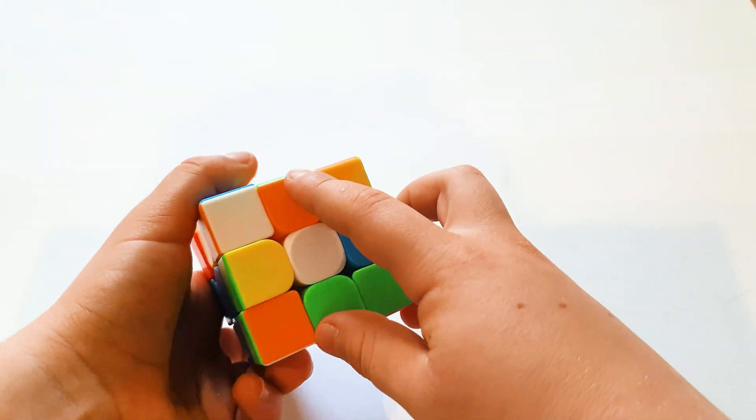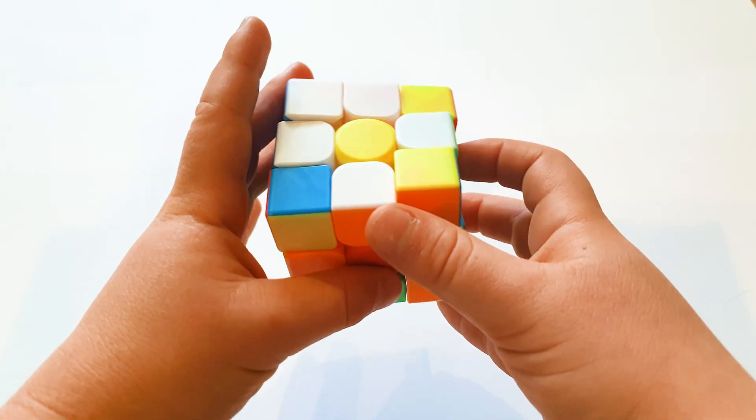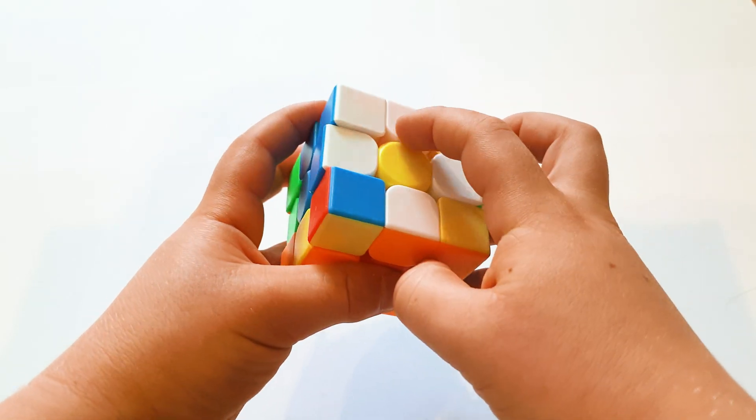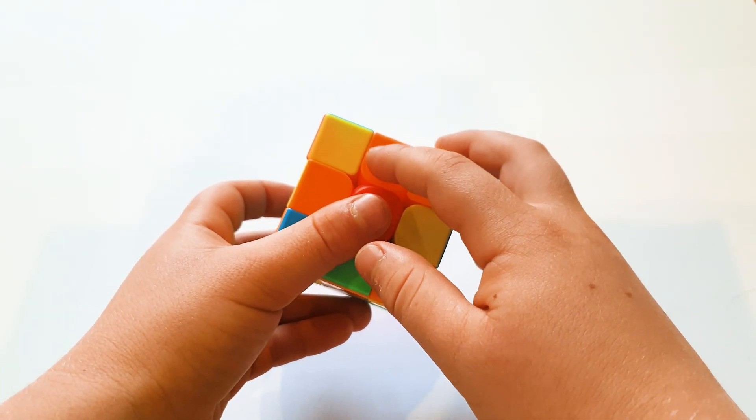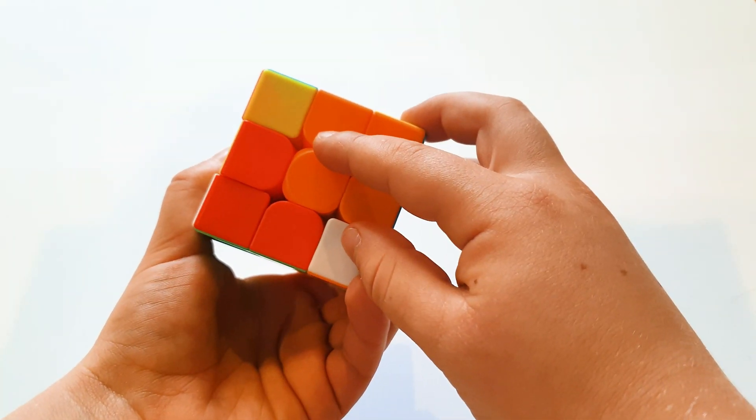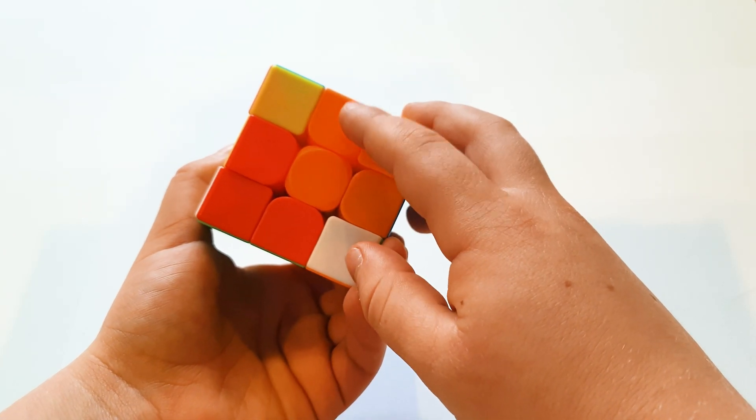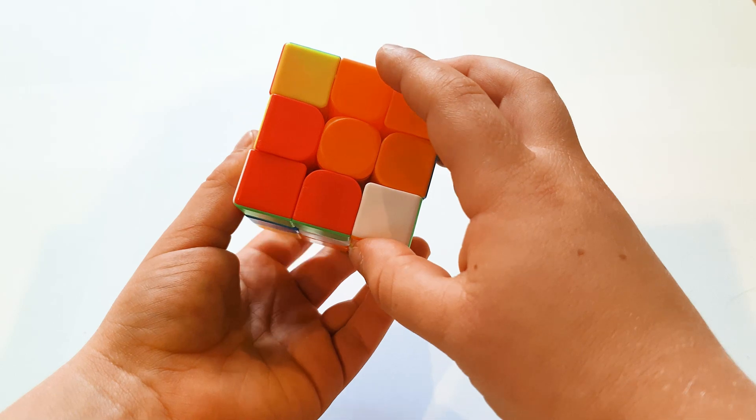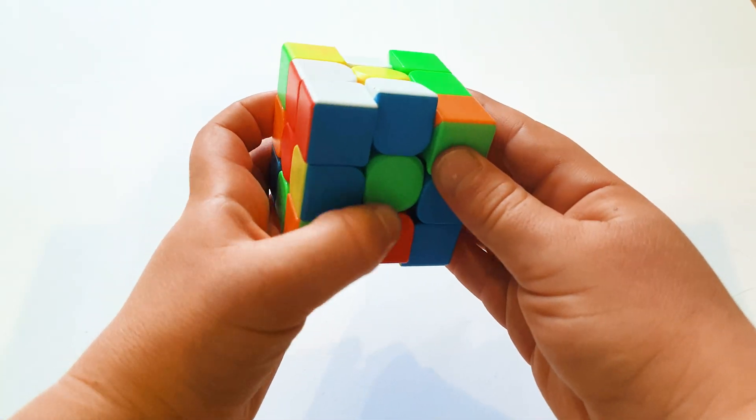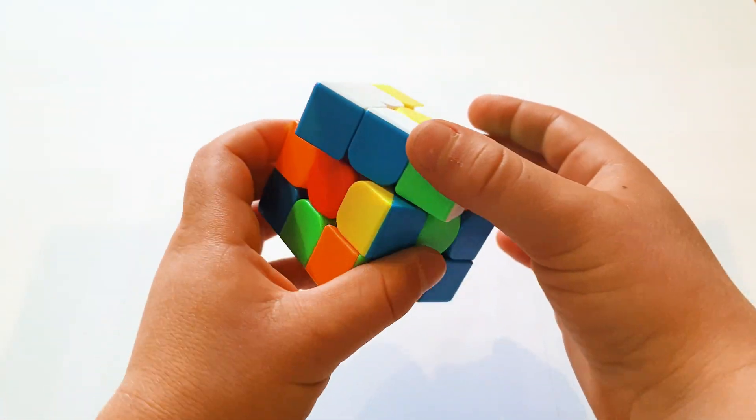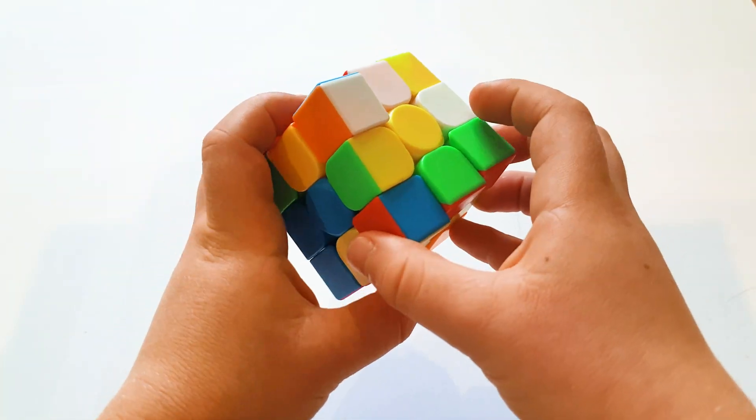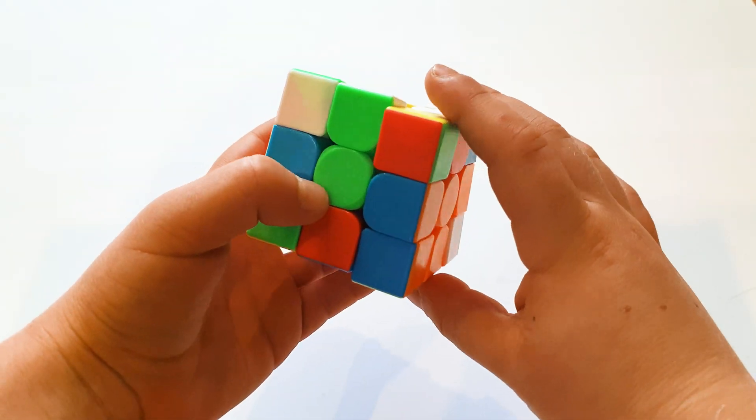The next step is to make a cross on the opposite side. Pick one of the petals of your daisy and look at the side under it. Then turn it until it's matching with the center piece. For example I got orange and orange. So I matched it and I turn it two times like this. I find another one and turn it. You do it with all your petals until you end up with a cross.